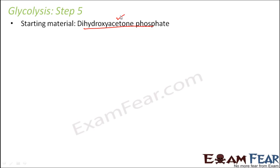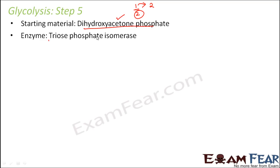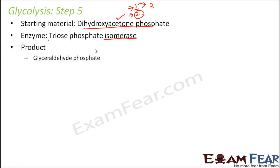One product was dihydroxyacetone phosphate and the other was glyceraldehyde phosphate. In step 5, what is done is that dihydroxyacetone phosphate is also converted into glyceraldehyde phosphate. That means in step 4, two products were formed; in step 5, one is converted into the other. The enzyme used here is called triose phosphate isomerase. Whenever you have the term isomerase, it converts a compound into its isomer. Since both products were isomers of each other, we use isomerase to convert one into two. The product is glyceraldehyde phosphate.